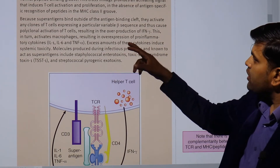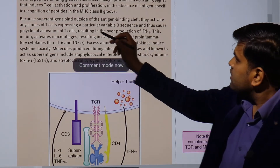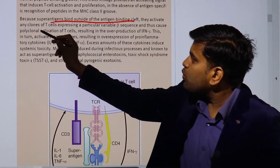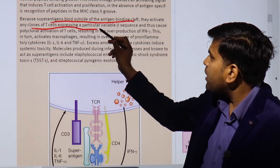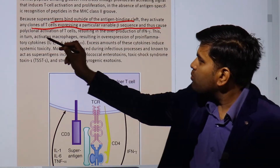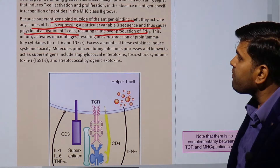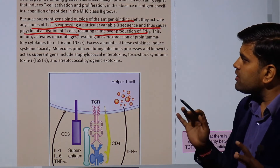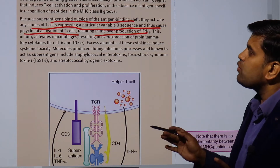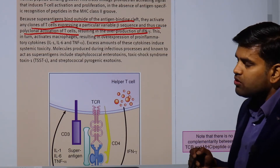Because superantigens bind outside of the antigen binding cleft, they activate any clones of the T-cell expressing a particular variable beta sequence, and thus cause polyclonal activation of T-cells, resulting in the overproduction of interferon gamma.